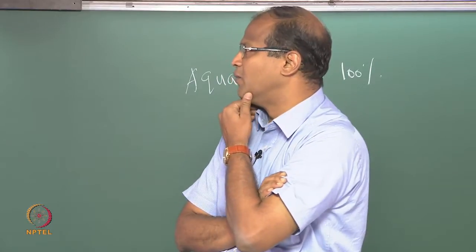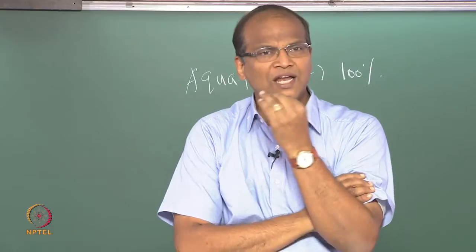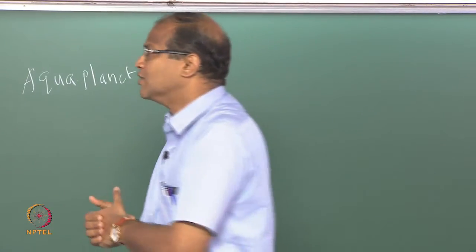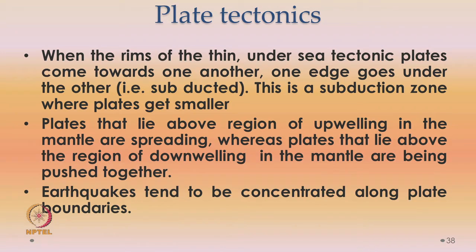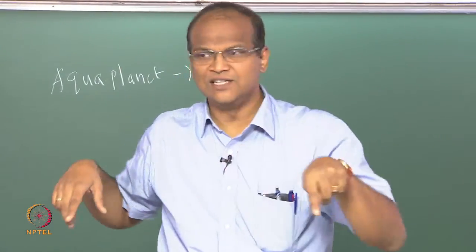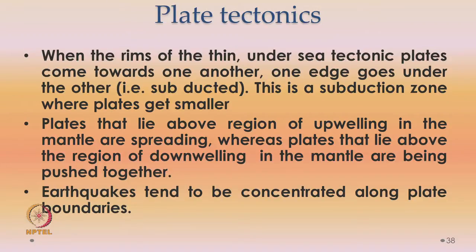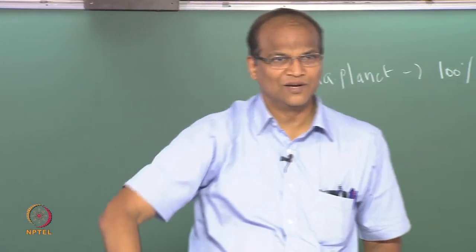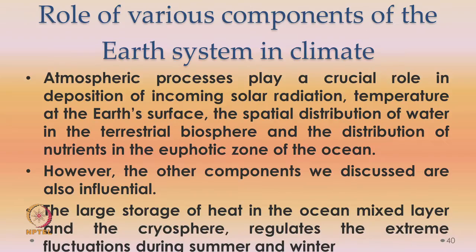Earthquakes tend to be concentrated along the plate boundaries — wherever there is an interface between the various plates, you can see that the fault lines and earthquakes are taking place along them. There is a shear between two plates in one case, two plates moving apart in another, and two plates moving towards each other in a third. You can see hot spots and the lithosphere. There is something called a convergent plate boundary and divergent plate boundary — let us not get into all these details because our goal is to study the atmosphere. This is just an overview.